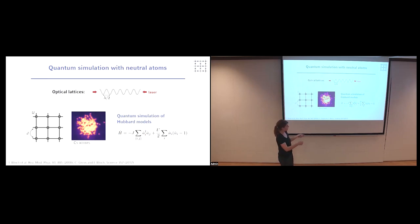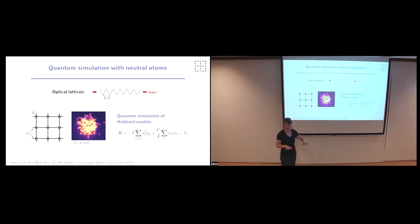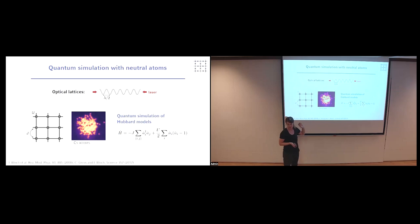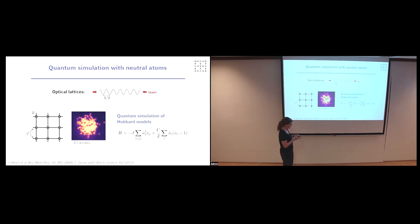The A-dagger-A term describes hopping from one site to the other — we destroy an atom on one site J and create it on site I, giving the kinetic energy term. The other term counts how many atoms are per site, giving the interaction energy. Depending on the ratio of these two parameters, there's a transition from a metallic or superfluid state — where atoms spread out over the whole array — to an insulating phase, where they avoid sitting on the same site because the interaction energy is so large. It's precisely that transition that we use to generate specific initial states.